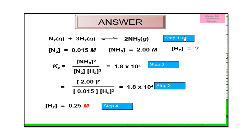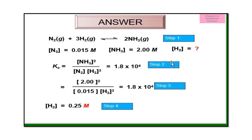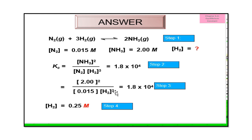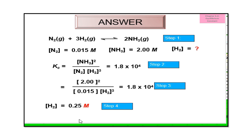To repeat: step one, make sure the equation is balanced. Step two, write down the Kc expression. Step three, substitute all values given. Step four, answer the question — in this case we need to find the concentration of hydrogen gas.